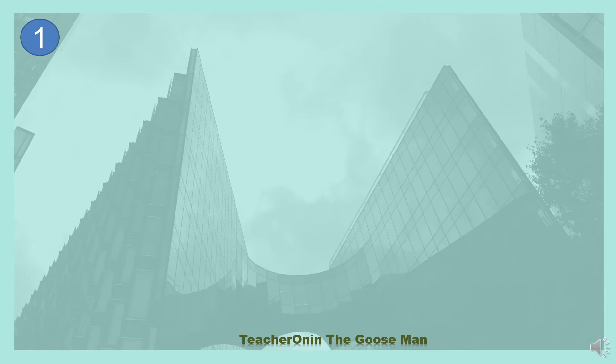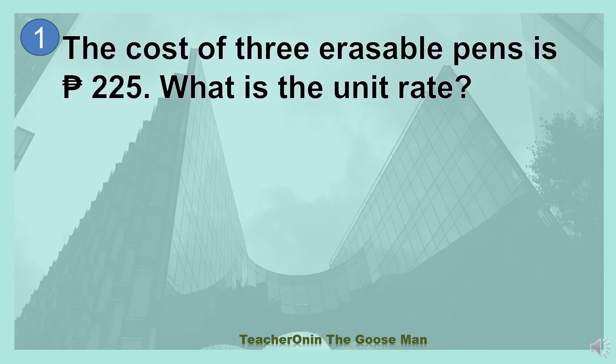Let's have our example number one. The cost of three erasable pens is 225 pesos. So what is the unit rate? In order to find the unit rate, we would like to get the things being compared, namely the three erasable pens and the amount in pesos. So I can write that in fraction form: 225 pesos all over three pieces.